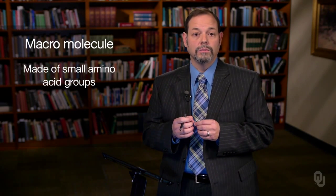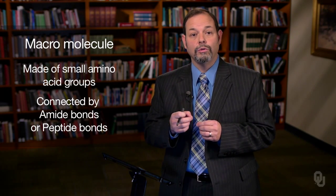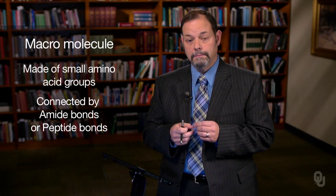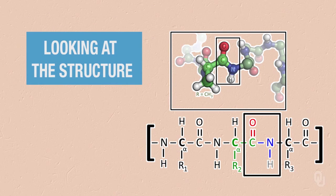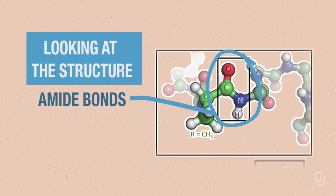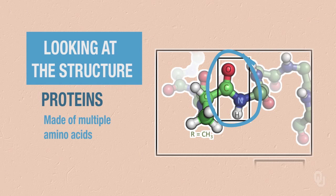With our proteins we have a macromolecule made of small amino acid groups. The amino acid groups are connected with amide bonds, often referred to as peptide bonds when we're dealing with biochemistry or protein chemistry. If we look at the structure, we see that we have a carbonyl attached to a nitrogen — this is the amide bond, and it is the peptide backbone of a protein. Proteins are made of multiple amino acids connected by these amide bonds.